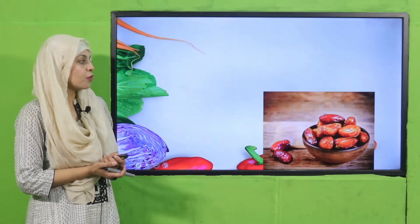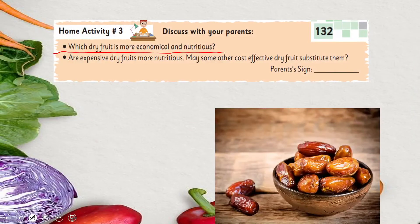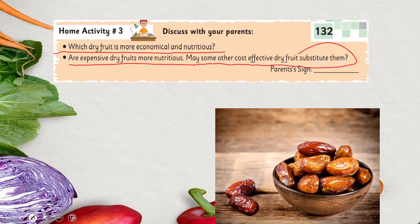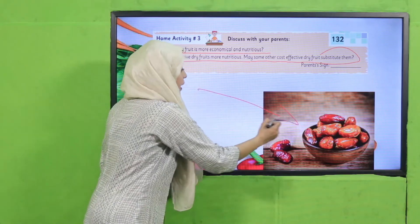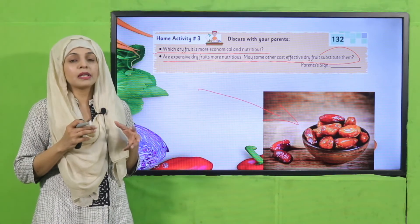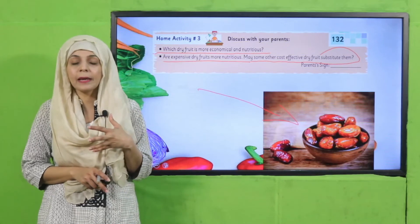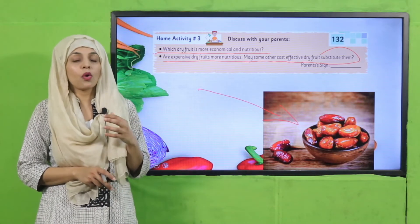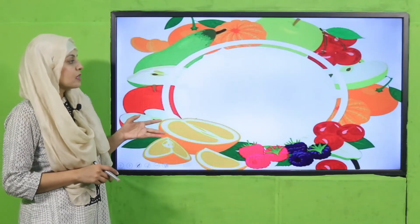Beans and dates also provide us with protein and nutrients. Quickly tell me - which dry food is more economical and nutritious? We often hear that dry fruits are expensive, but there are also inexpensive dry fruits like dates. Almonds are also very good for our health.